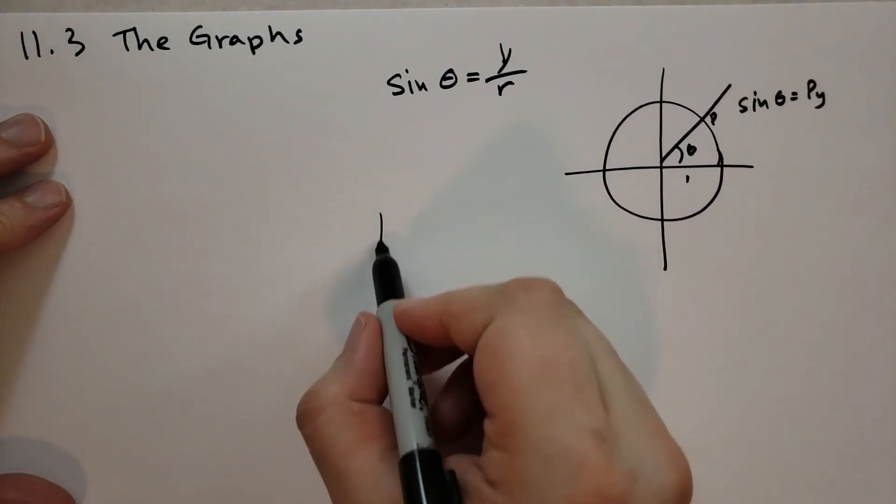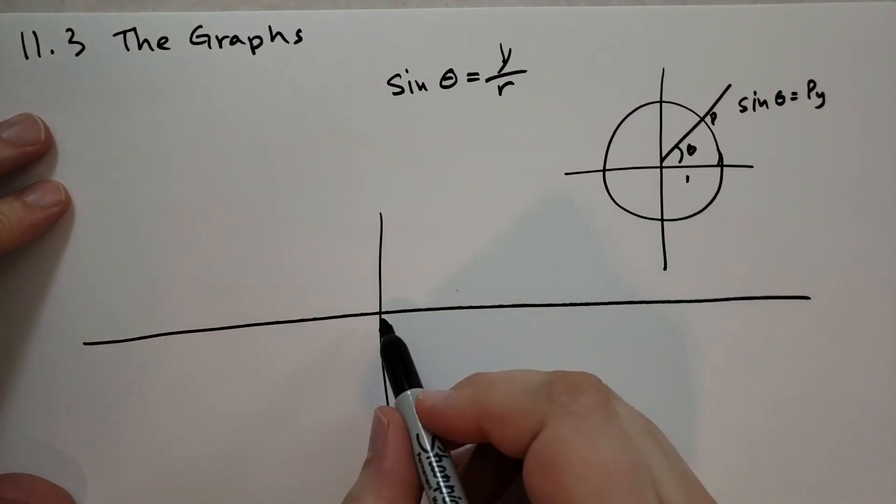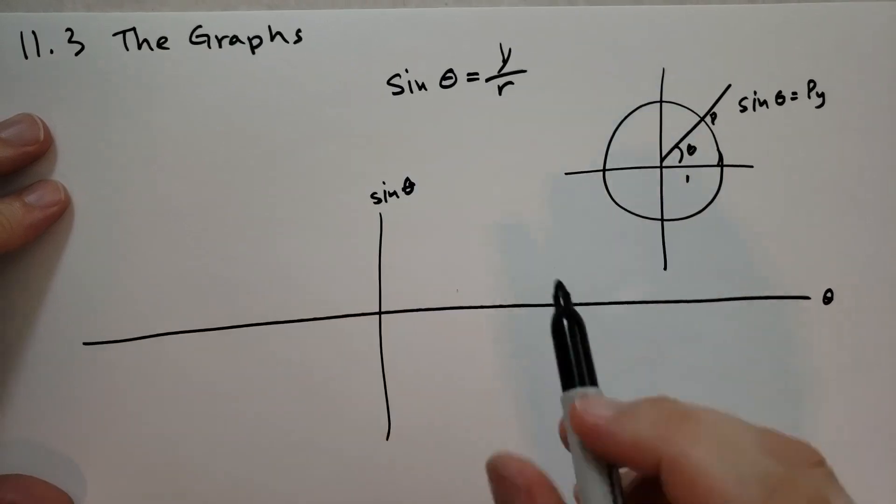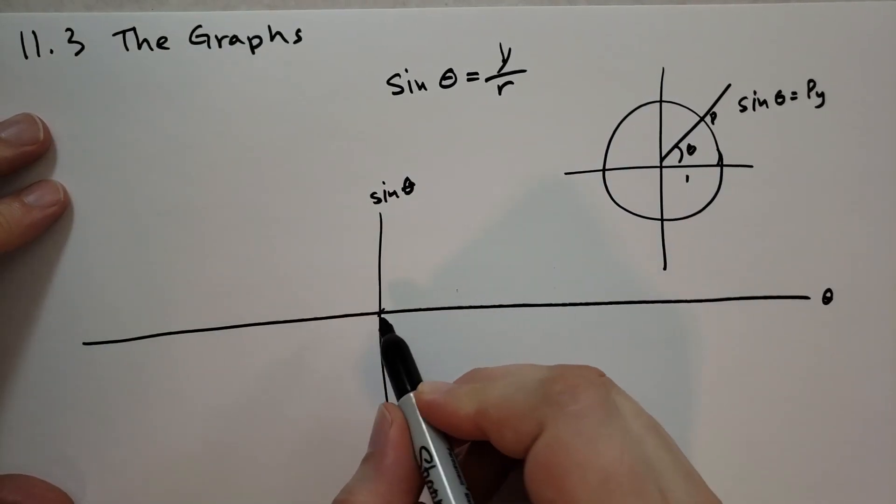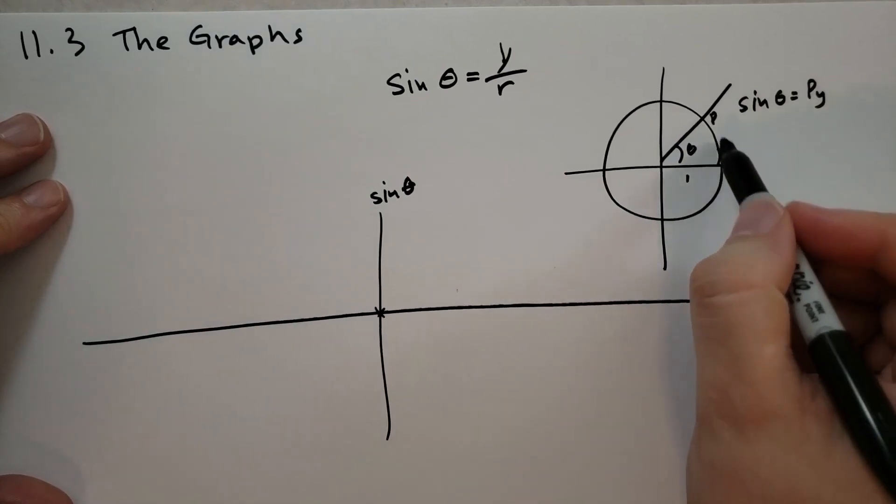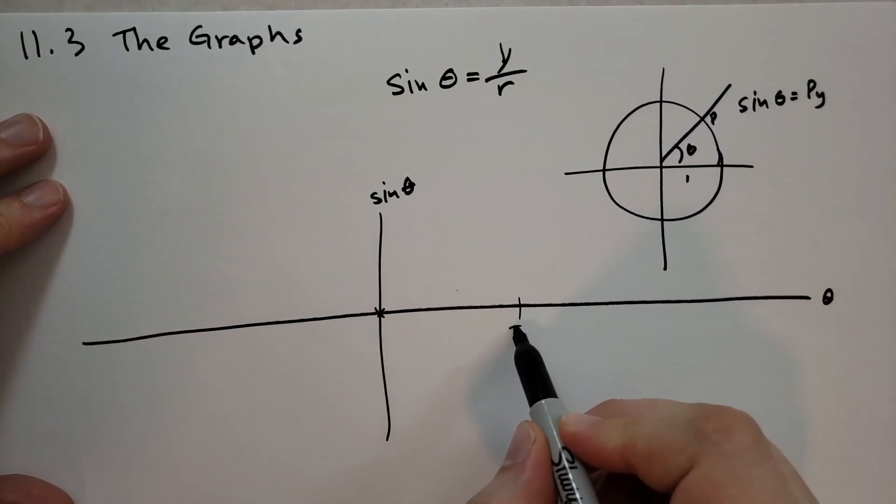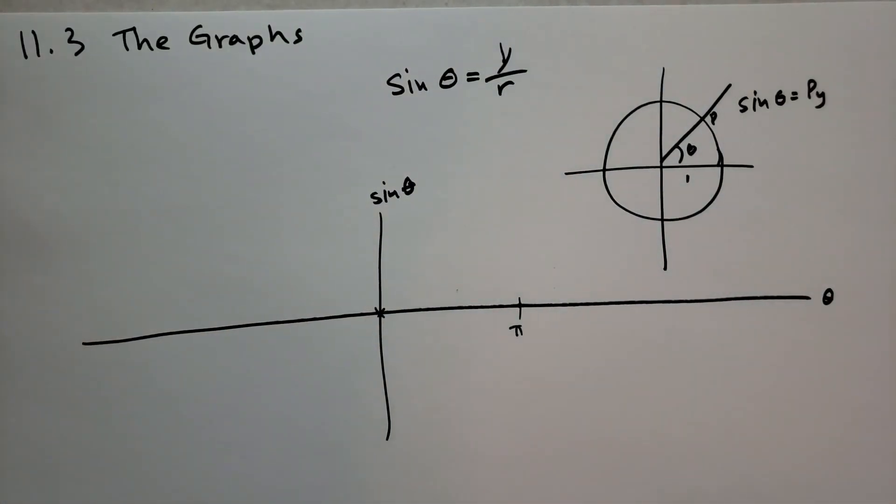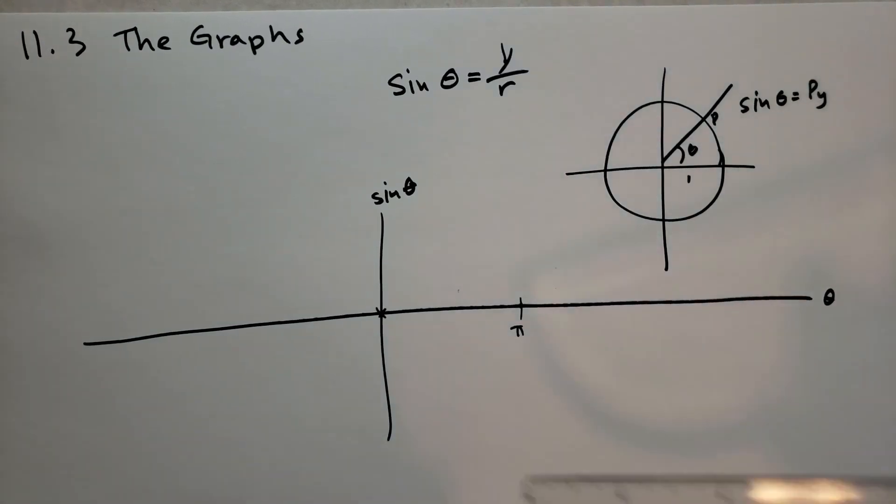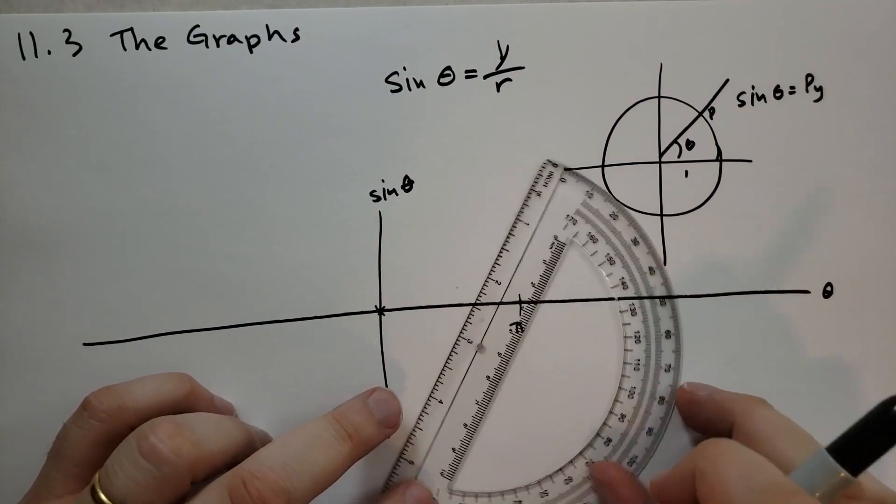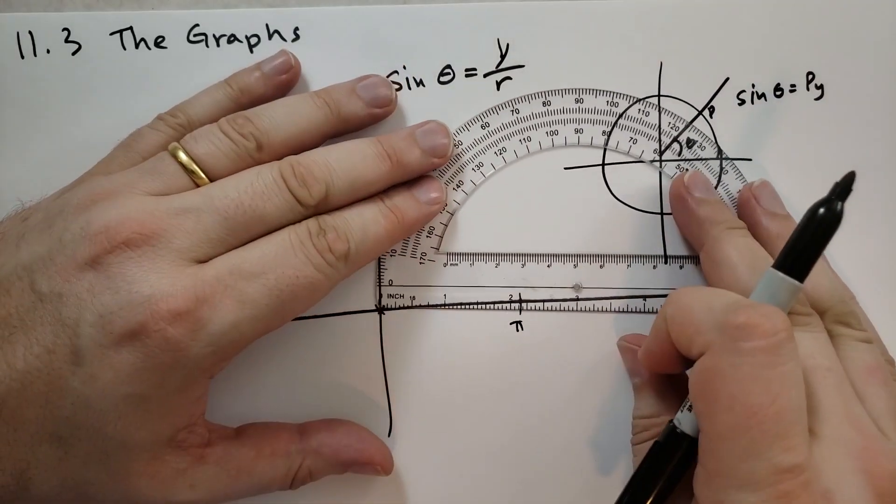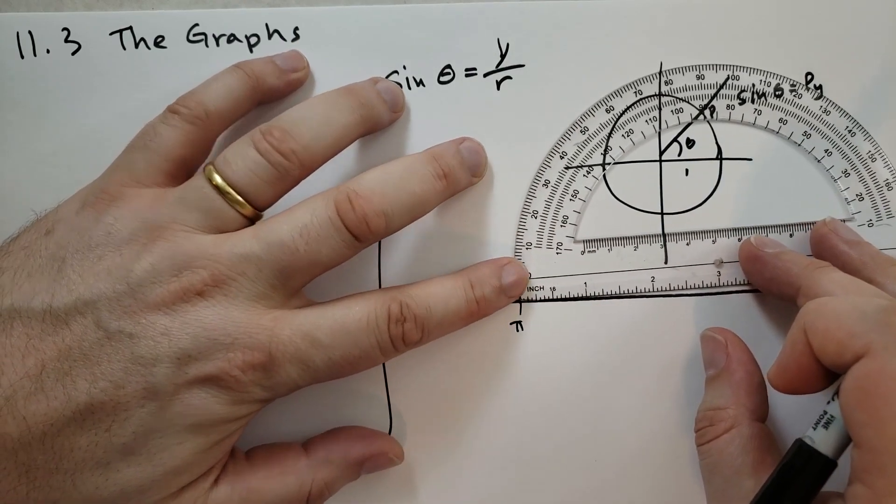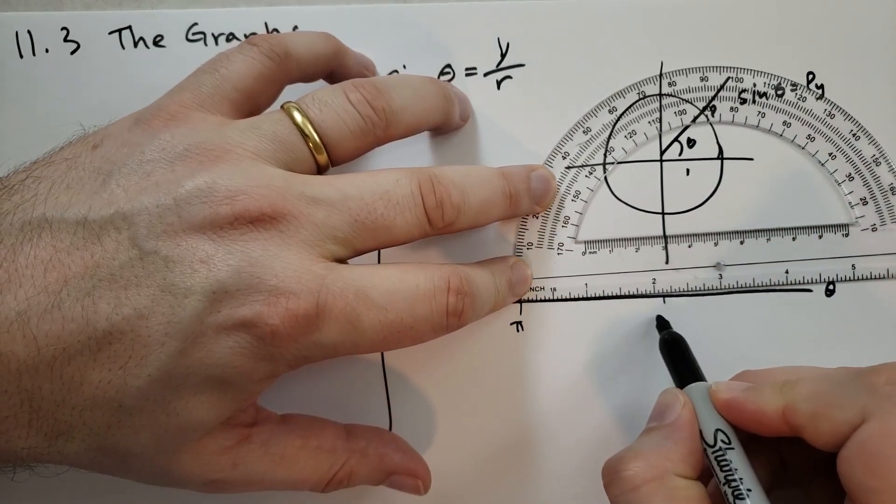Let's start graphing it out. Let's draw a table here. At theta equals 0, this is the measure theta, and this is going to be sine of theta. When theta is 0, then the distance is 0. When we get to theta equals pi, it's also going to be 0 again. When we get to 2 pi, let me pull out a ruler here. I'm going to use pi as the unit distance here. That is a distance of about 2 and an eighth. This is 2 pi.